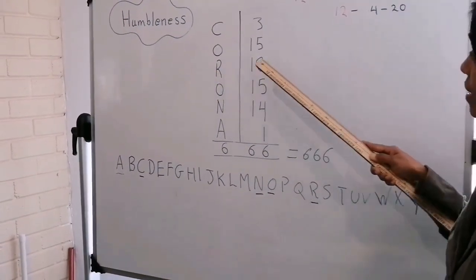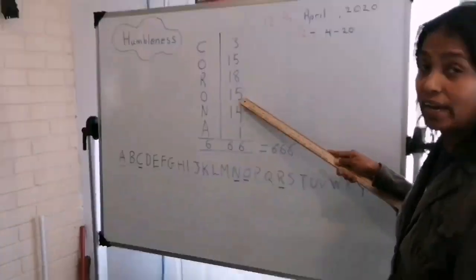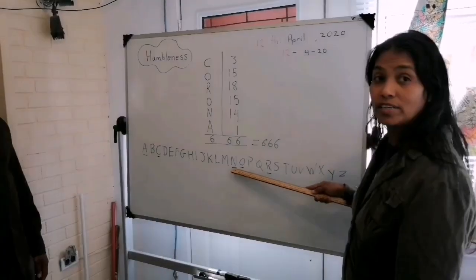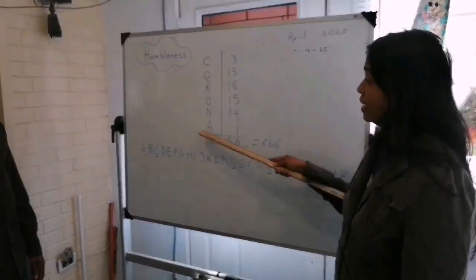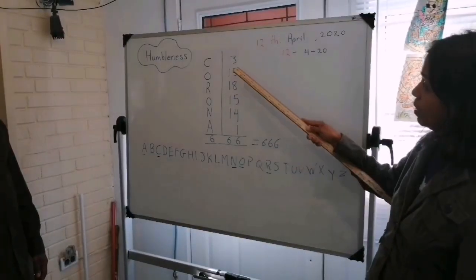Similarly, R, eighteenth place in the alphabet. O, fifteen again. N lies in the fourteenth place of the alphabet. And A is the first place of the alphabet. So we put number one.